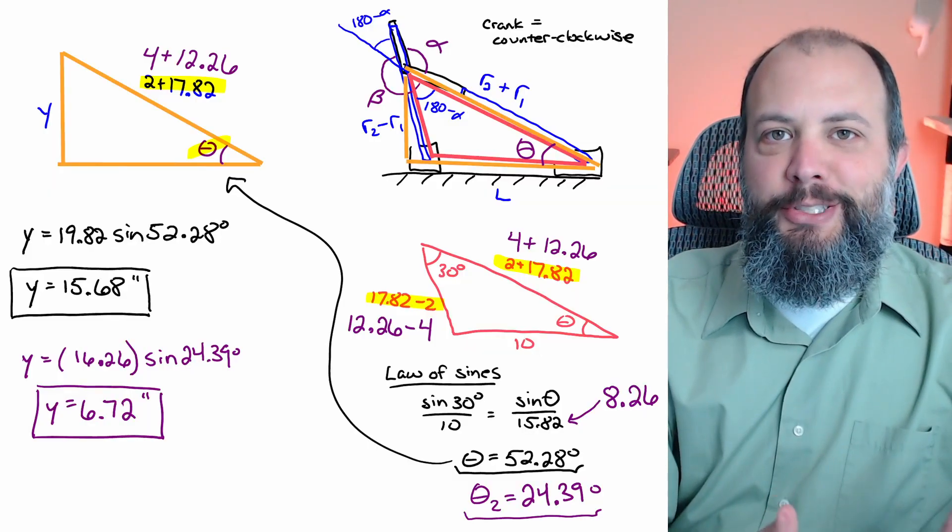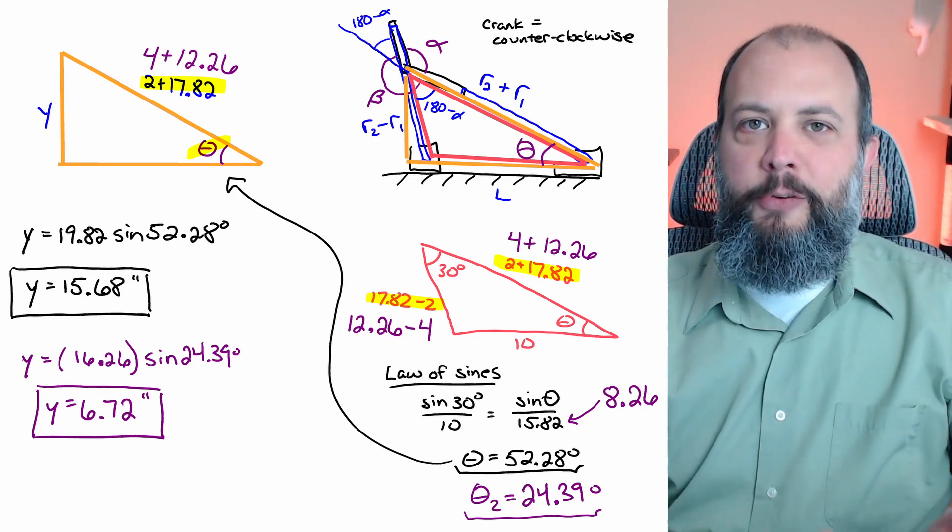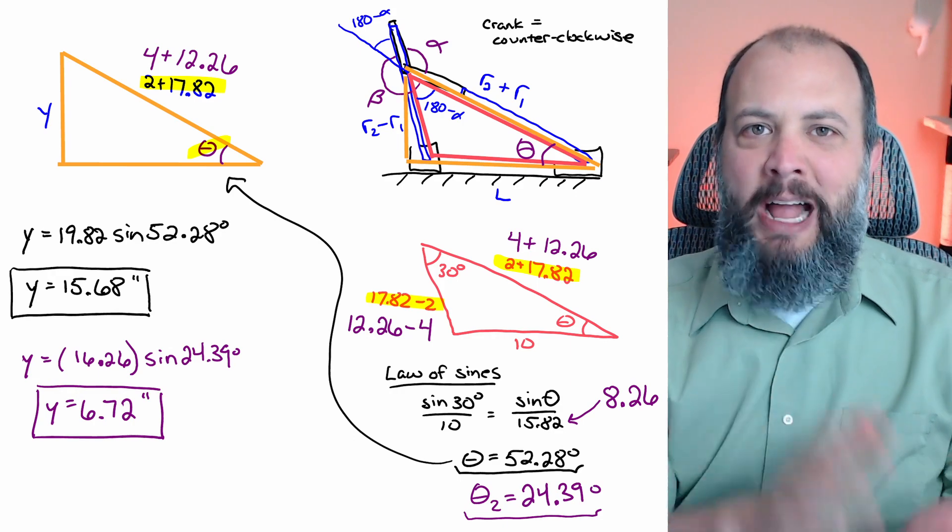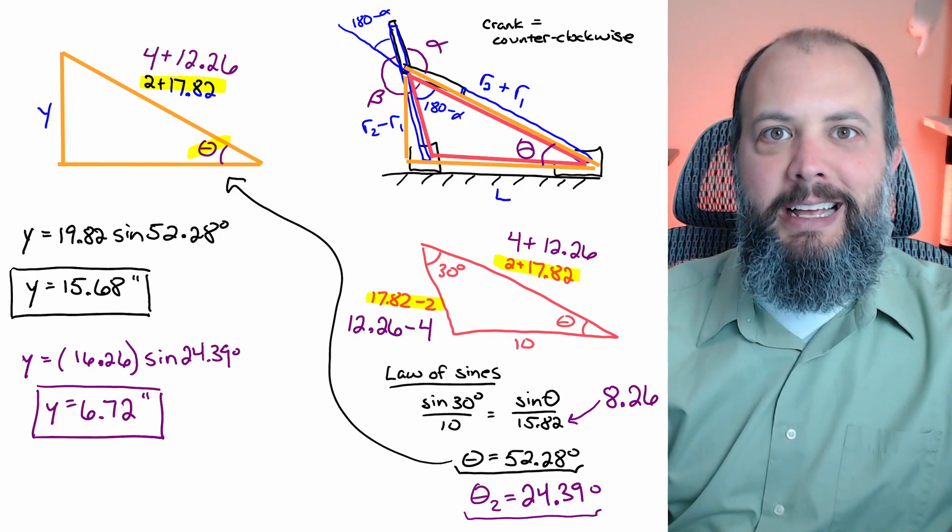When solving the offset distance I'll first need to find a new value for that angle theta and the final value for offset distance y is drastically smaller than before.